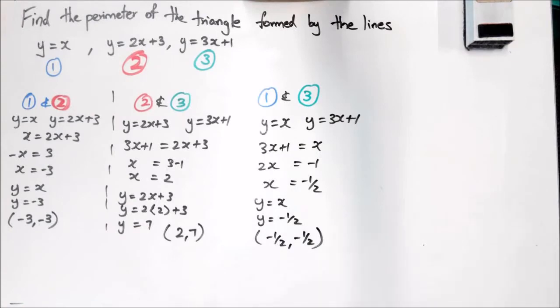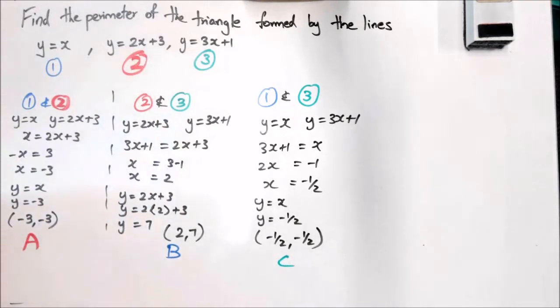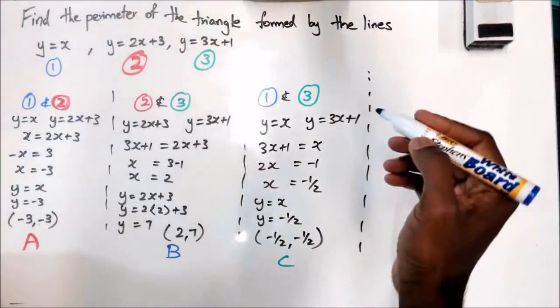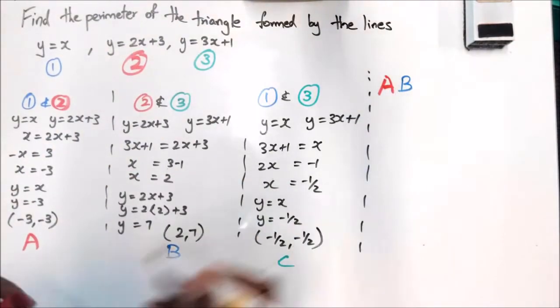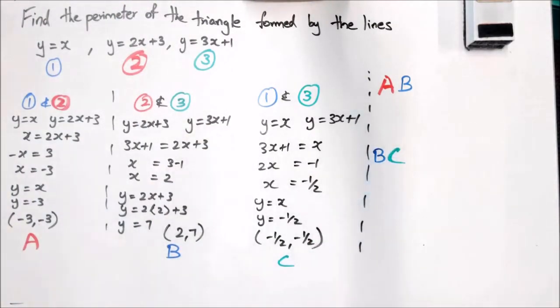So what would be really good is probably to give them some sort of label so it's easy for you guys to work out. I might call this point A, I'm going to call this point B, call this point C. Is that okay so far? I think you guys can do it from here onwards. From this point onwards you need to work out distance of AB, distance of BC, and distance of AC.